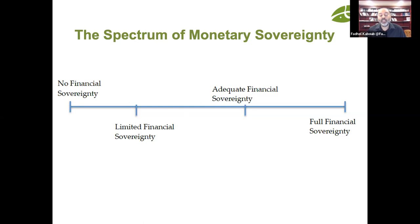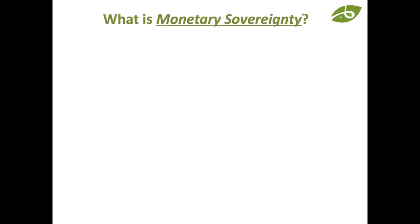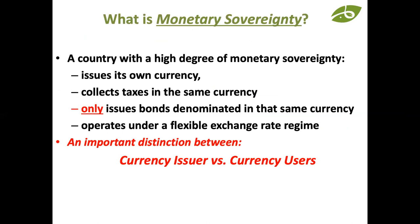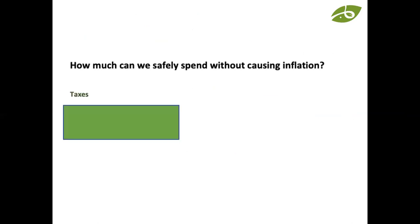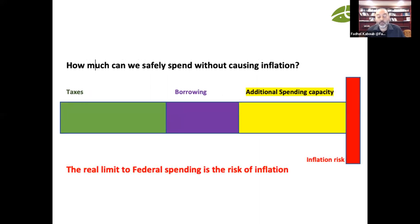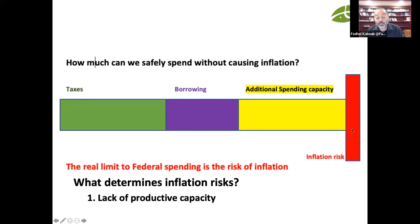The question for us is how to develop strategies that move us to the higher end of the spectrum, giving more monetary sovereignty and as a result more economic sovereignty. The mainstream approach tells us government spending is limited by taxes and borrowing. The MMT approach tells us there is a much larger spending capacity that's untapped — not unlimited, but limited by the risk of inflation.